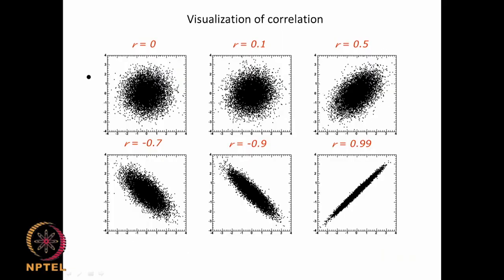You can fit one independent variable to the observed dependent variable, or you can have two, three, or more independent variables. Initially, you look at how they seem to be related — or correlated, as we call it. If I plot X (the independent variable) on one axis and the dependent variable on the y-axis, and the data appears scattered with no pattern, then obviously they are not correlated. When we calculate the correlation coefficient, it will become almost zero.